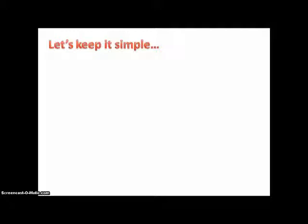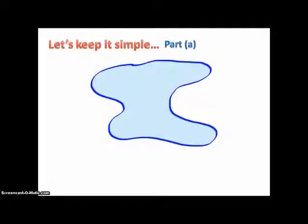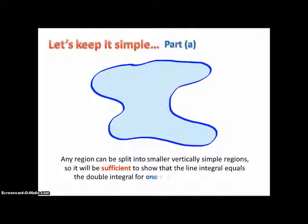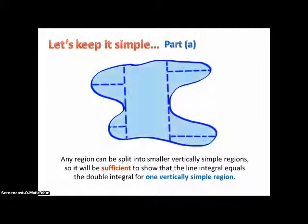To keep it simple, for Part A we claim that any region can be split into smaller vertically simple regions. So it's sufficient to show that the line integral equals the double integral for one vertically simple region, because then we can add all those together. For example, here's how we could split a region into vertically simple regions — if we show it's true for one, it follows for all of them combined.